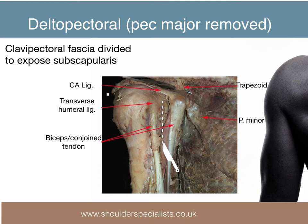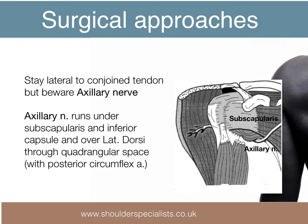The clavipectoral fascia is then divided just lateral to the short head of biceps and the conjoint tendon is carefully retracted medially to expose the underlying subscapularis. This can then be divided along with the capsule to enter the glenohumeral joint.